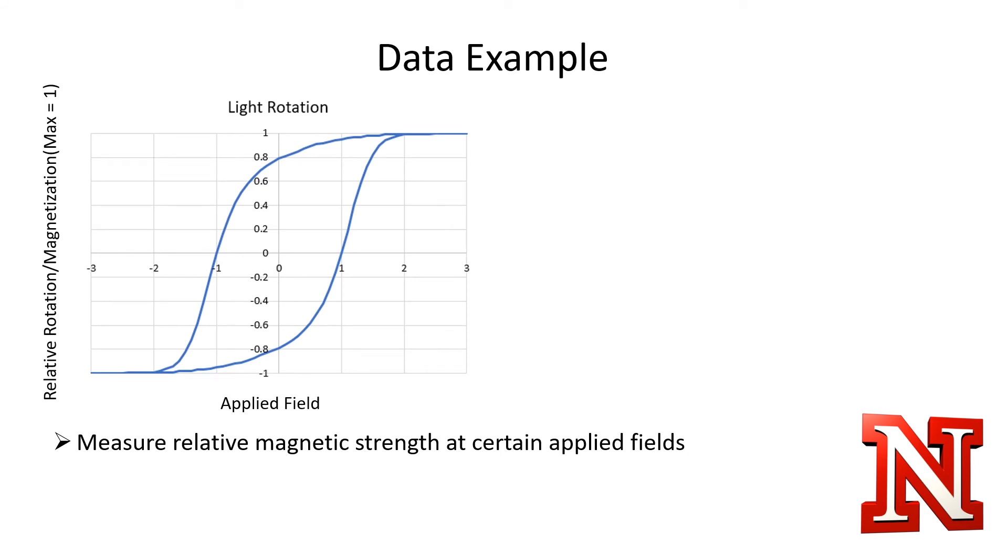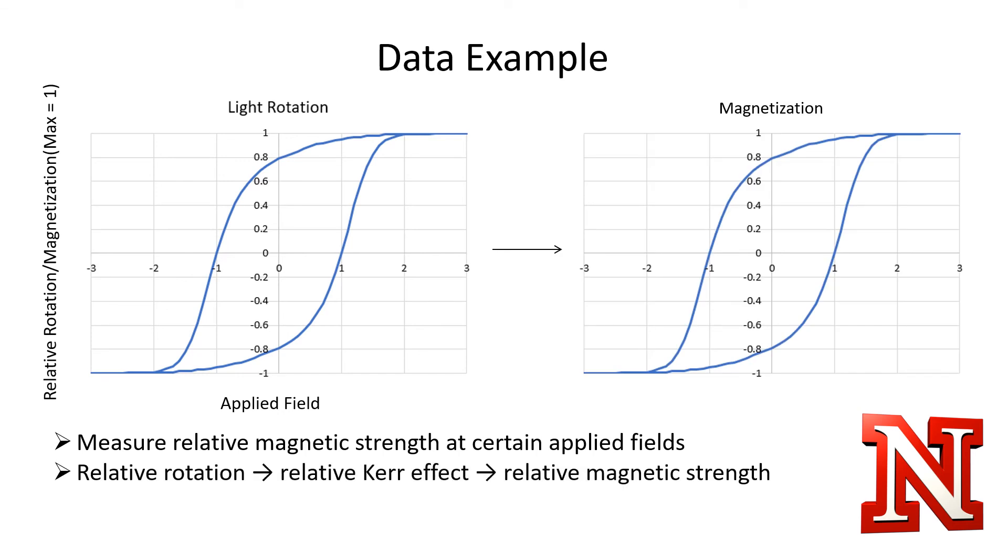Once the data is fitted to compare each data point against the maximum rotation, we have a graph of relative data as shown, where the maximum and minimum values are 1 and negative 1, meaning 1 times maximum value and negative 1 times the maximum value. Since the rotation is from the Kerr effect and is for the case where we use linearly polarized light proportional to the magnetization of tested material, the relative data for the rotation is identical to the relative data for magnetization, which is what we were originally attempting to find.